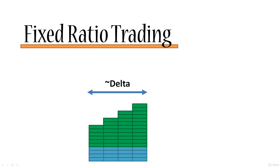Let's say your Delta is $1,000 and you're at the stage where you're trading with two lots. In order to proceed to the next step, you have to add another two Deltas on top of your current funds, which means $2,000. Because you're trading with two lots, reverting back to our previous examples, you're actually earning $500 per trade. That means it'll take you four trades to earn those $2,000.